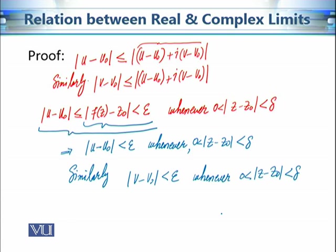So this implies |u − u₀| is less than epsilon whenever the distance between z and z₀ is less than delta. Similarly, we can prove this for v and v₀: |v − v₀| is less than epsilon whenever |z − z₀| is less than delta. There is a simple point here: if we want to prove that the limit of u is u₀, then we choose our epsilon and then go to the definition of the limit of the complex valued function.